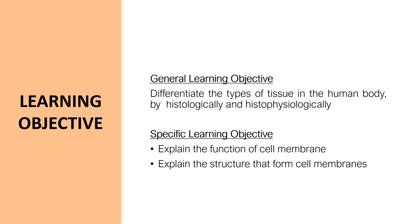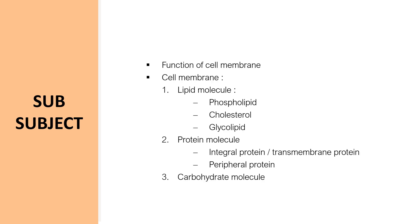This is the learning objective of this subject. After studying histology in general, students are expected to be able to distinguish the types of tissues in the human body histologically and histophysiologically. Specifically, after watching this video, students are expected to be able to explain the function of the cell membrane and the structures that build up the cell membrane such as lipid, protein, and carbohydrate molecules. In detail, students are expected to describe the characteristics of phospholipid, cholesterol, and glycolipids composing the lipid molecules in the cell membrane; the characteristics of integral proteins and peripheral proteins composing the protein molecules; and the characteristics of carbohydrate molecules in cell membranes.